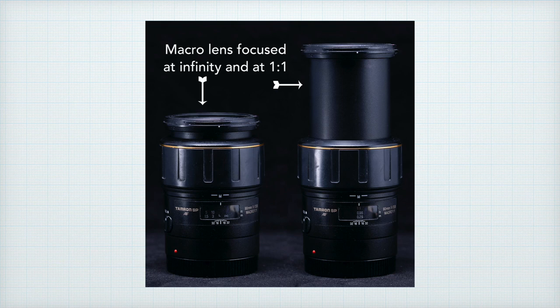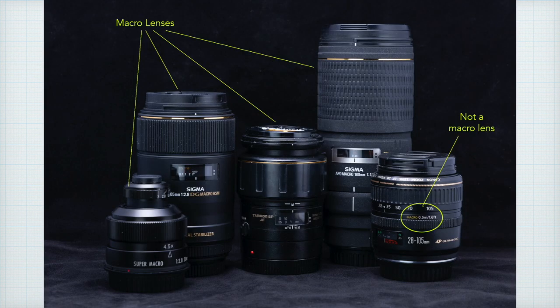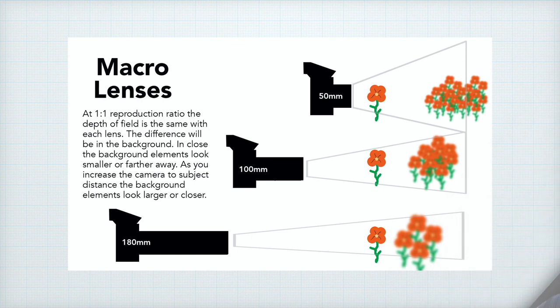A macro lens lets you focus in at a 1-to-1 reproduction ratio or higher — where the subject is the same size on the sensor as it is in real life. Some macro lenses offer even greater magnification. Canon has a lens that only works from 1-to-1 to 5-to-1 and cannot be used at normal working distances. Many lenses have 'macro' in their name but do not let you get to 1-to-1 reproduction ratios — they should be described as close focusing. Macro lenses are designed with different aberration corrections, such as curvature of field, than non-macro lenses, though many photographers do use a macro lens in place of a standard lens.